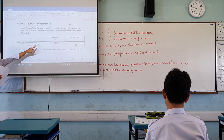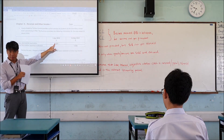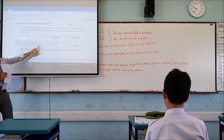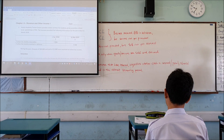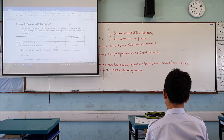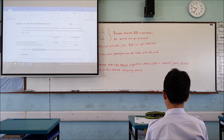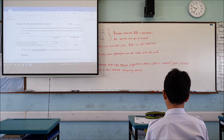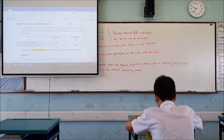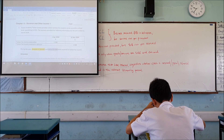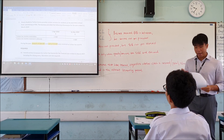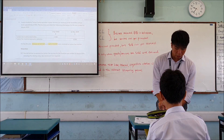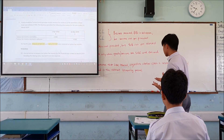Your tuition fee income receivable is $2,500 at the start, and your tuition fee income received in advance is $4,000 at the end. During the year, checks of $8,900 — I need you to highlight this one — and cash of $5,000 will be received as tuition fee income. Now let me draw out a timeline to explain what is going on in this question.